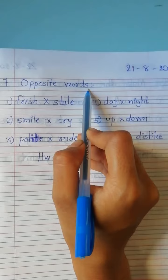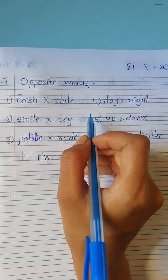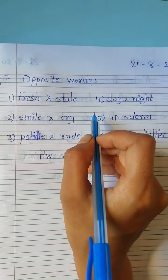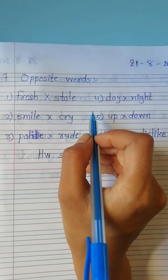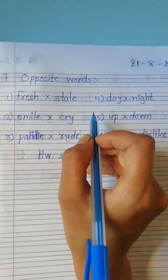Opposite Words. Opposite word means a word that expresses a meaning opposed to the meaning of another word, in which case the two words are antonyms of each other. So, it is called opposite word. Let's start.